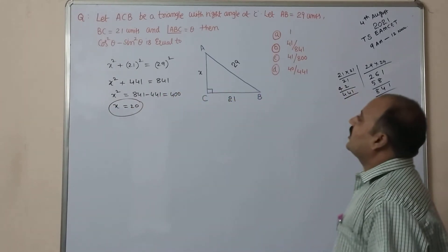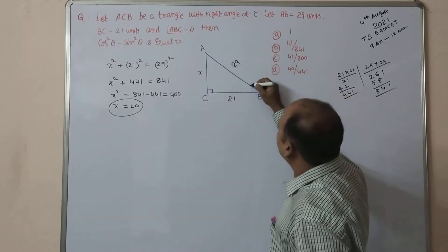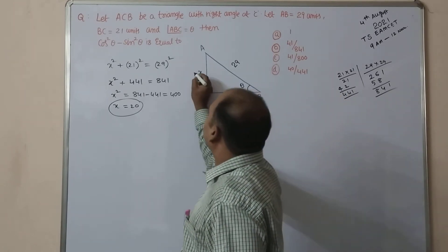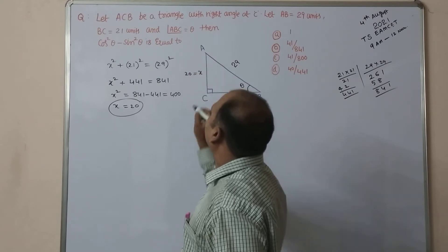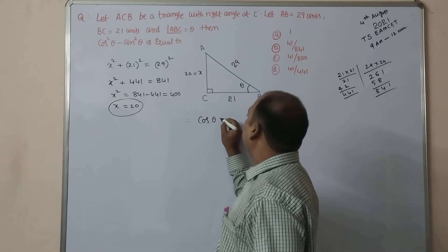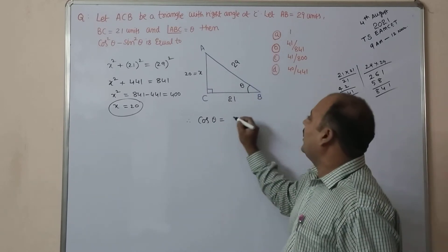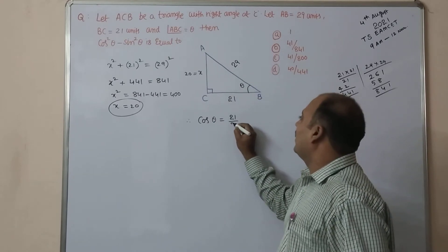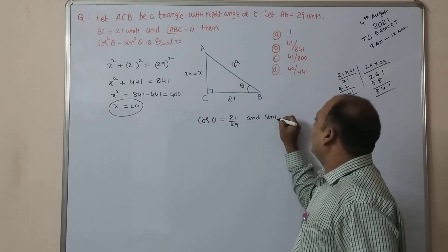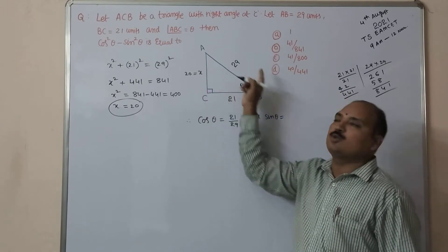After that, they are asking angle at B. They mentioned that theta is at point B. From this, X is equal to what we got? 20. Therefore from this triangle ABC, cos theta is equal to adjacent side by hypotenuse, 21 by 29. And sin theta equal to opposite, 20 by 29.